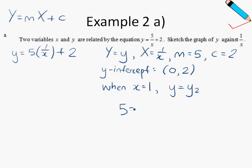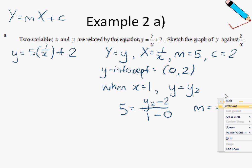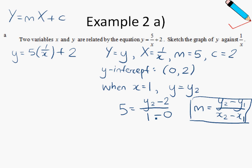for example. So my gradient m, which is 5, will be equals to, using the gradient function, y2 minus 2 over 1 minus 0. So in case you have forgotten how to find gradient, gradient is equals to y2 minus y1 over x2 minus x1. So just in case you have forgotten, let me just write out the formula for you over here.